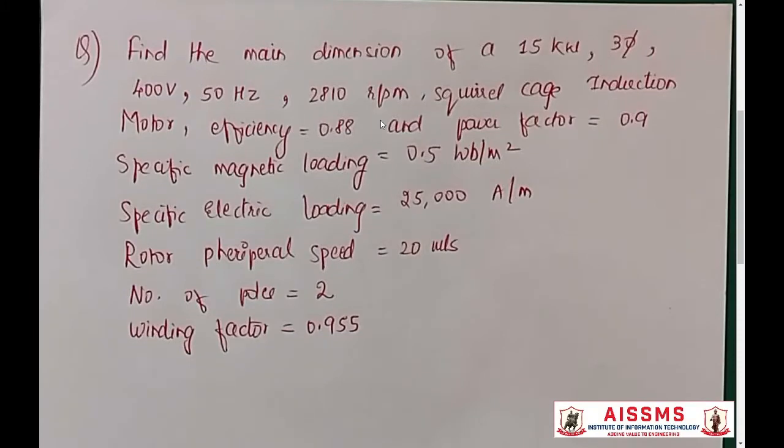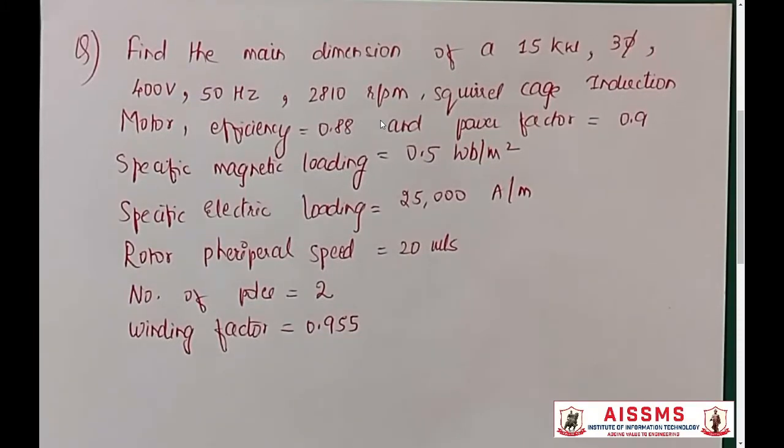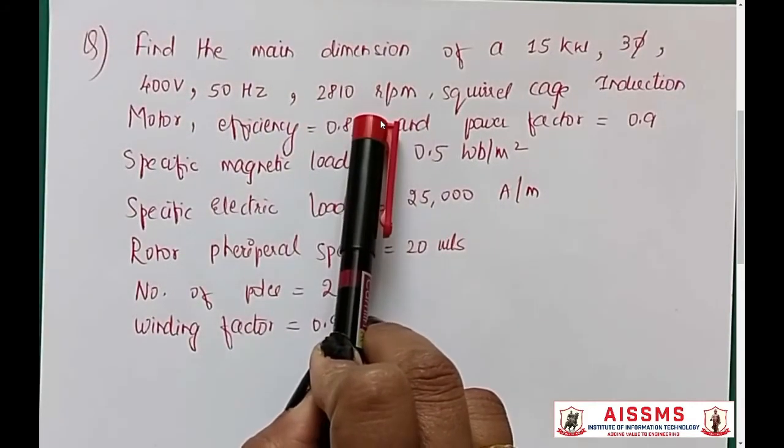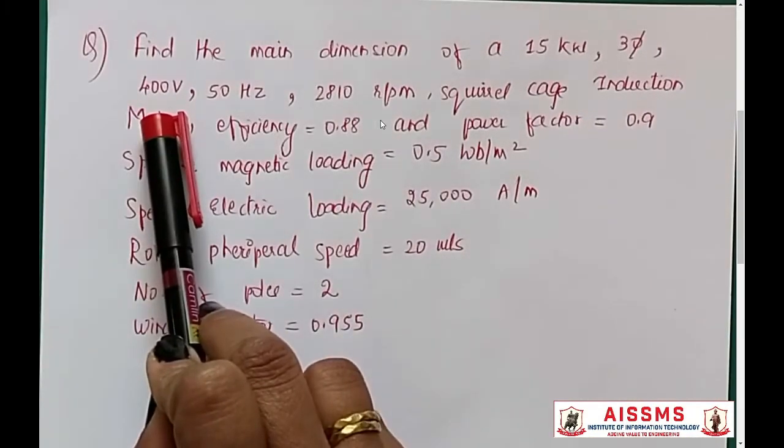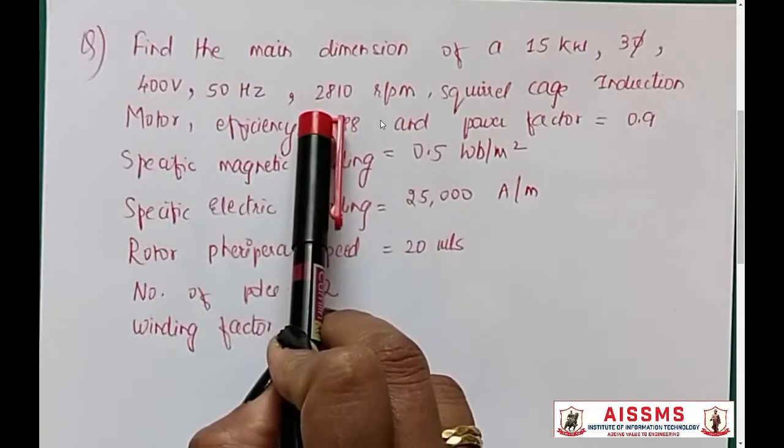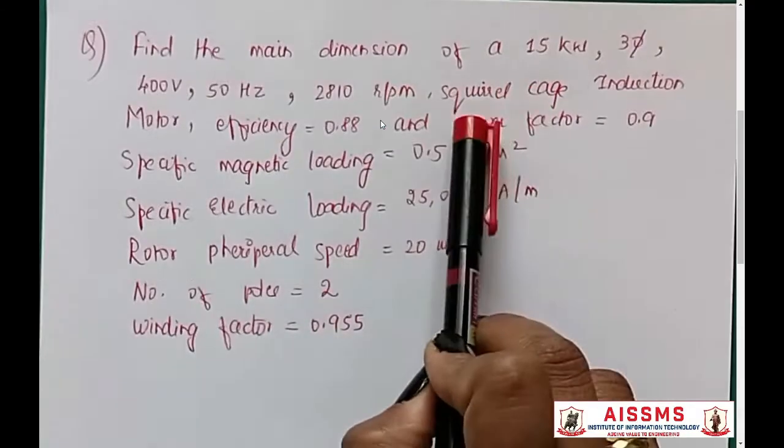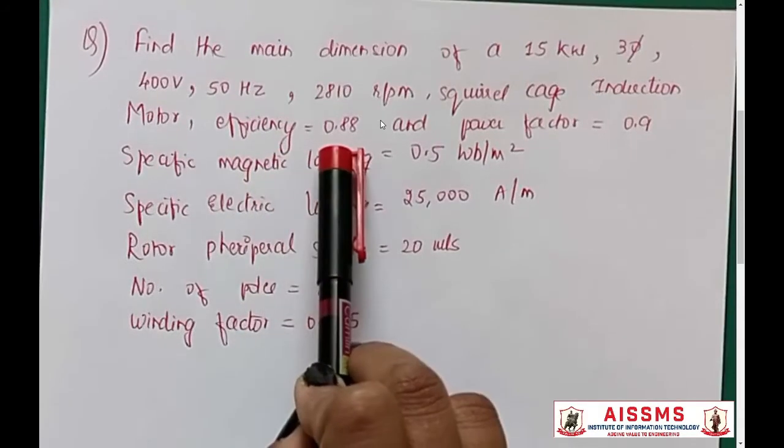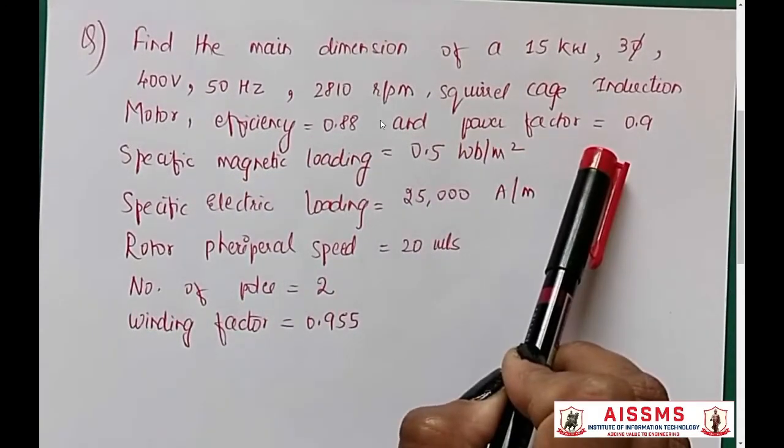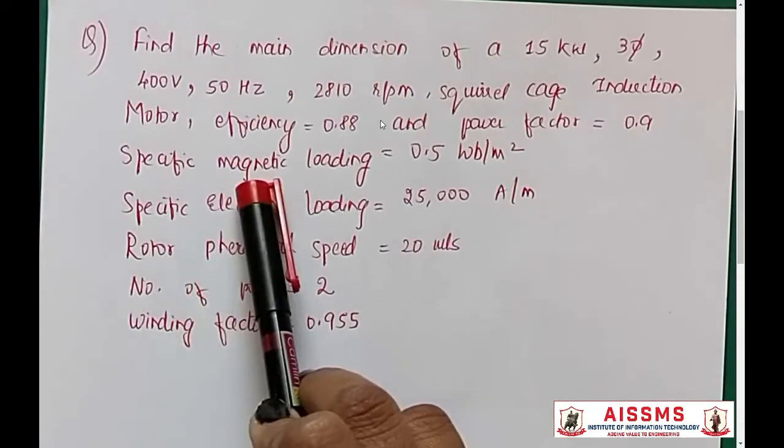Let's see numerical on calculation of the main dimension of an induction motor. Find the main dimensions of a 15 kilowatt, three-phase, 400 volt, 50 hertz, 2810 rpm, squirrel cage induction motor, which has an efficiency of 0.88. Power factor is 0.9.